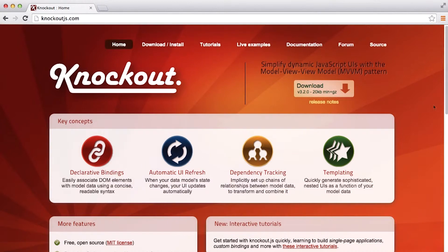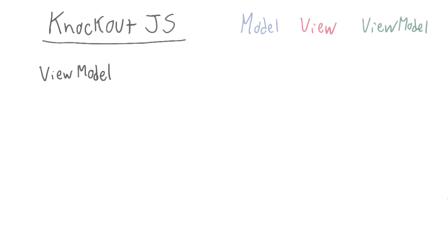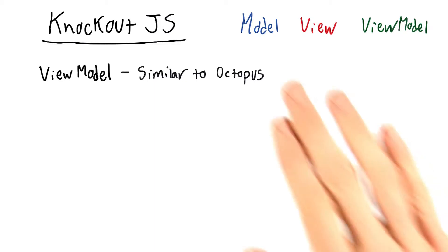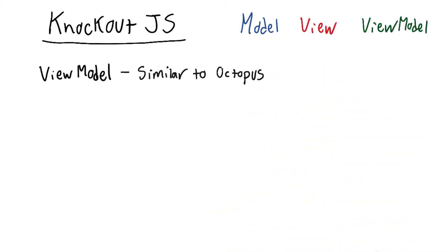If you go to knockoutjs.com, you'll find a whole bunch of information, including some unfamiliar terms. Let's spend a minute unpacking some of these terms. First, we have view model. The view model is similar to the octopus that we know and love — it's the thing that connects and separates the model from the view. The main difference for now is the name.